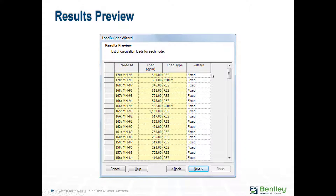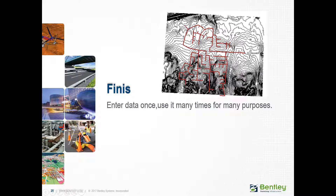The outcome for a particular manhole shows what the load would be, broken down from your source shapefiles — for example, as commercial, residential, and industrial categories. You can also assign each of those land use types to its own usage pattern.